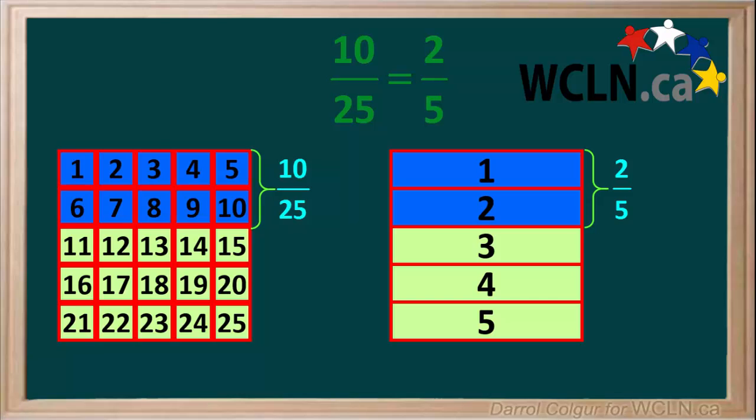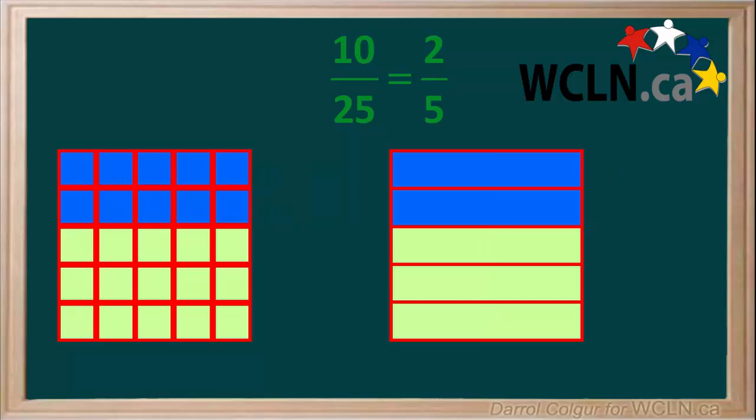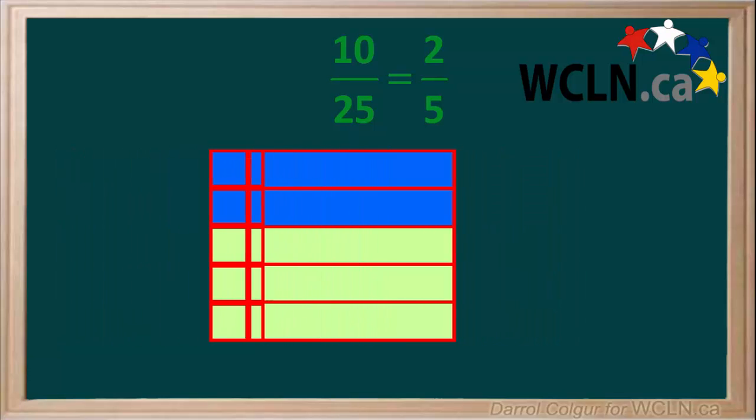We can see that the fractions 10 25ths and 2 5ths, which are both blue, cover the same proportion of each large square. This becomes more clear if we take out the numbers and move the squares together like this.